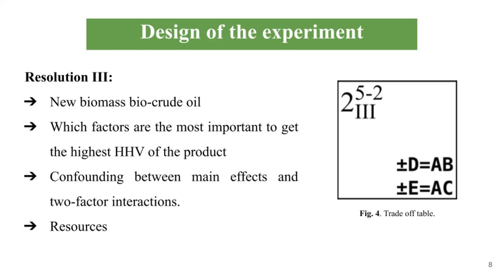Regarding the resolution of the design, it is suitable to look for a resolution III because of the nature of the experiment — developing a new biomass biocrude oil product and knowing which factors are the most significant to get the highest HHV. Considering that there will not be a full factorial design with 32 runs, but only 8 runs, the design is aware of the confounding between main effects and two-factor interactions, and it is considered that there will not be a problem with the aliasing.